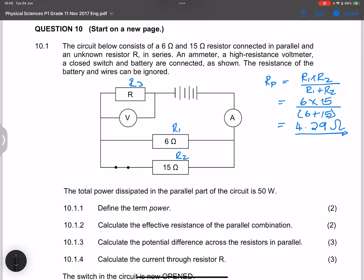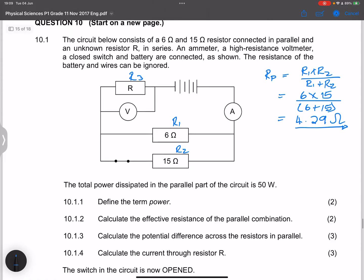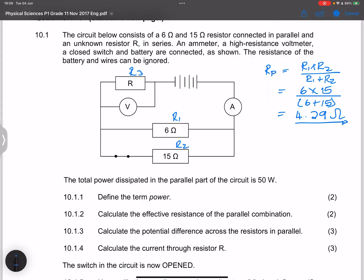Okay, so let's go to the next one. And they say calculate the potential difference across the resistors in parallel. Now, we know that both these resistors dissipate an amount of 50 watts of power. So I'm going to say, well, for 10.1.3, I know that power is equal to... Now, note in this case, I'm looking for voltage and I have the resistance. So I am going to say power is V squared over R.